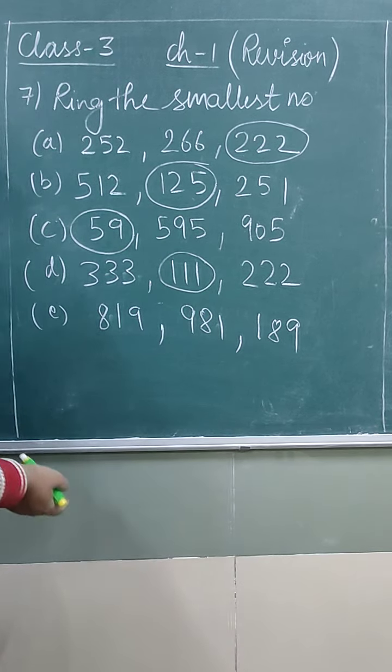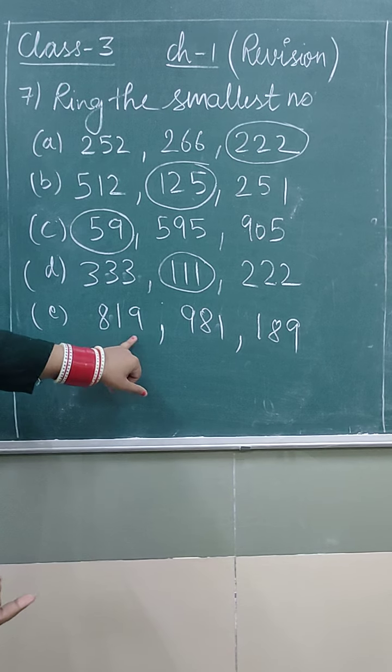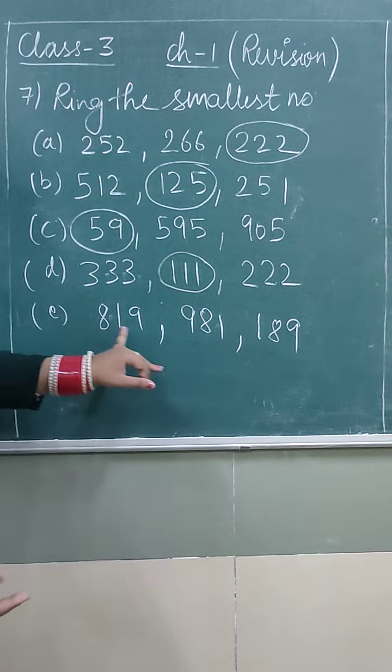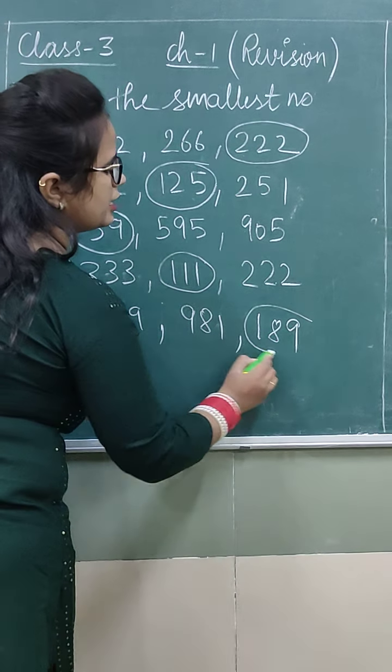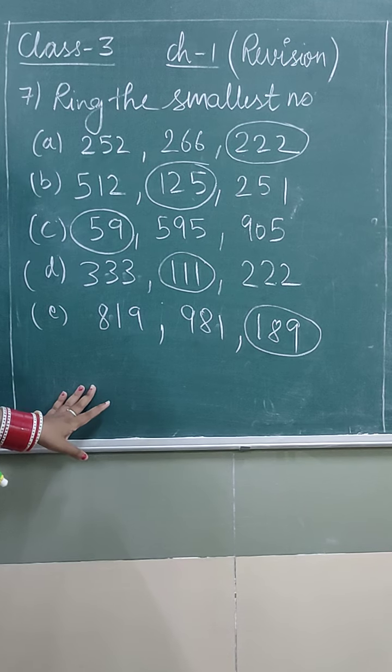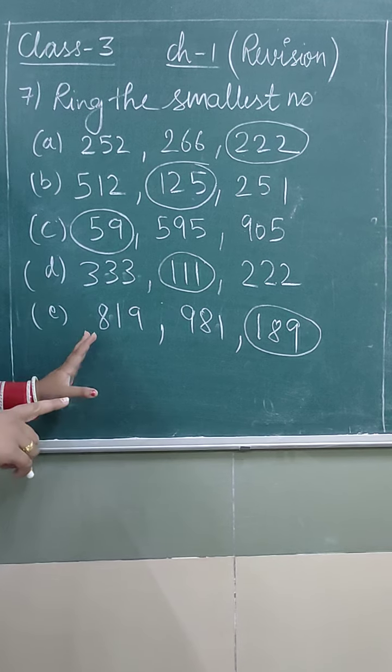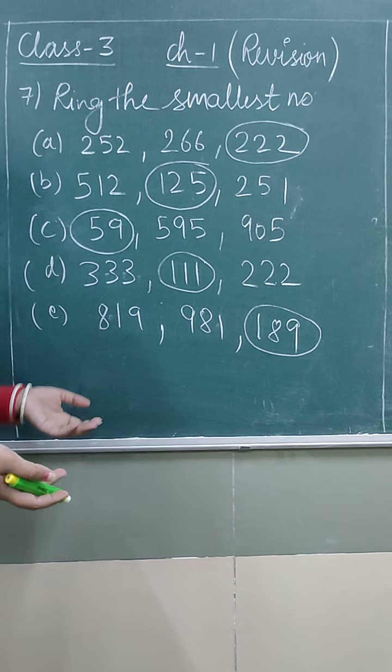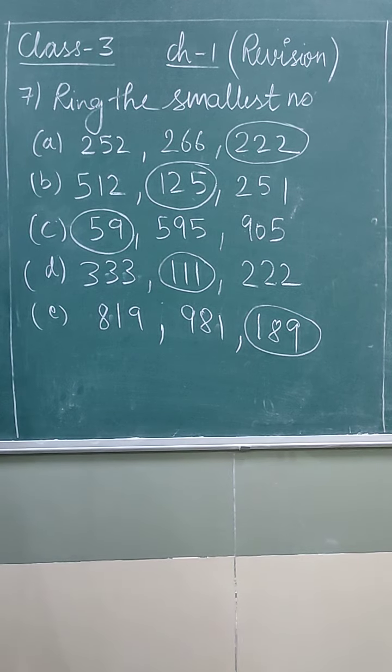In this we have 819, 981, 189. Obviously 189 is less than this. Within sum 8, we have to find the greatest number. Then you can search for the greatest number as well. You will try it yourself now. We will do the other question in the next class.